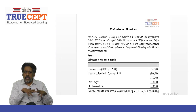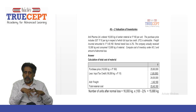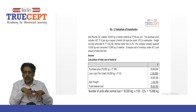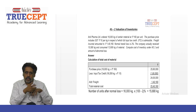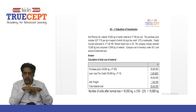Let us go ahead and take on an example on Accounting Standard Number 2 on valuation of inventories. Here we go with the question: Anil Pharma Limited ordered 16,000 kilograms of certain material at rupees 160 per unit.